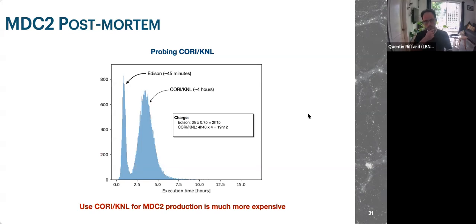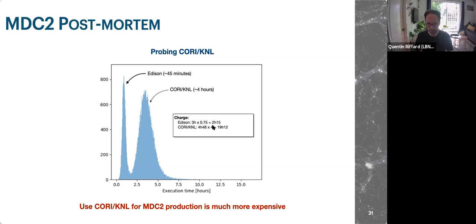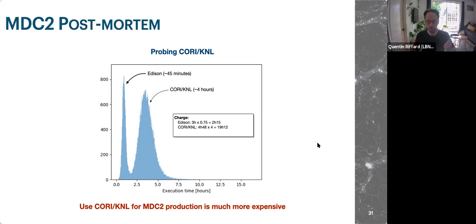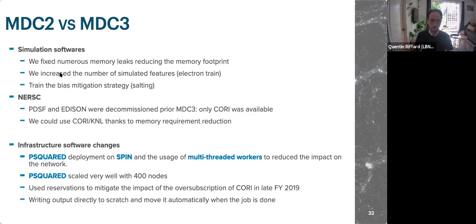Looking at KNL performance, there is roughly a factor of four difference in execution time between Haswell and KNL. Comparing the compute costs, Edison cost about 2 hours per job while Cori KNL cost about 19 hours, meaning Cori KNL would be too expensive for MDC2 production. This was mainly caused by memory leaks in the code. Between MDC2 and MDC3, we fixed many memory leaks, reducing the memory footprint from 4–5 GB to about 3 GB per job.